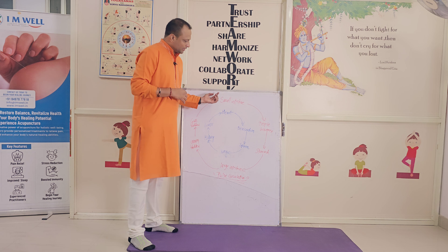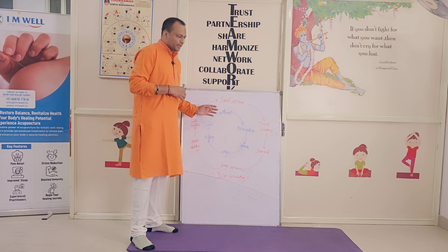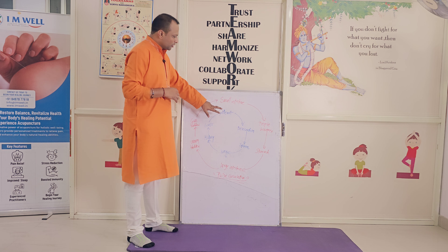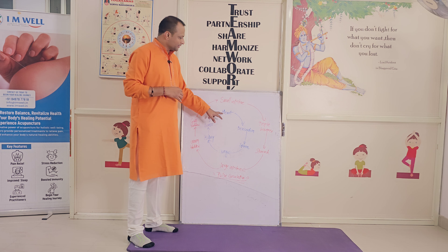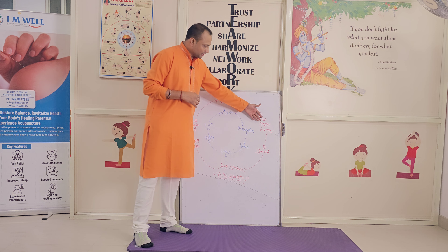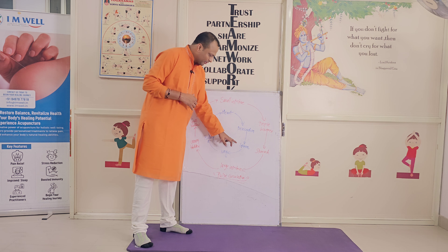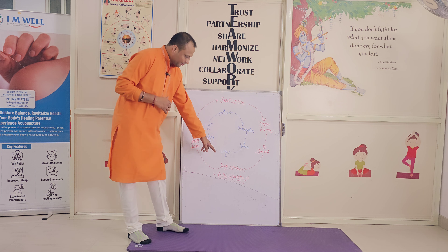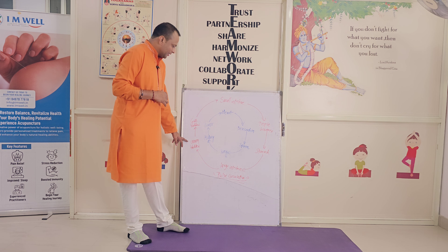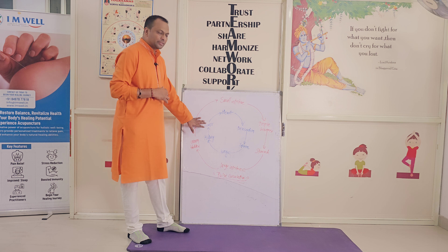There is a beautiful representation of the superficial pulse and the deep pulse and their correlations. Superficial is small intestine, deep is heart. Superficial is triple warmer, deep is pericardium. Superficial is stomach, deep is spleen. Superficial is large intestine, deep is lungs. Superficial is urinary bladder, deep is kidney. Superficial is gallbladder, deep is liver.